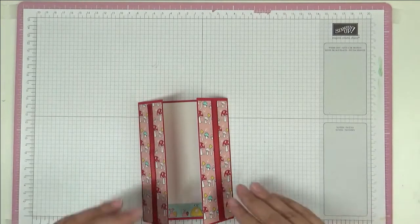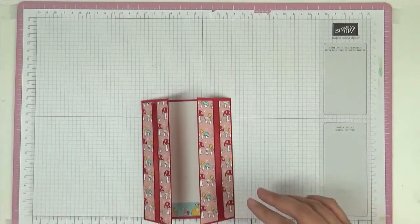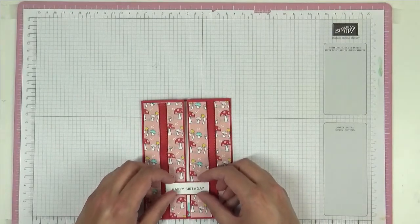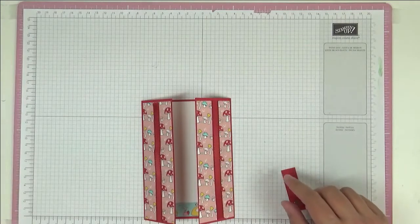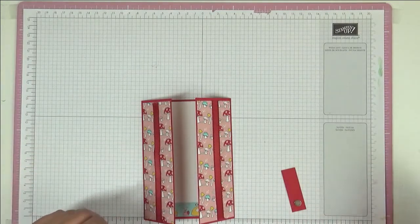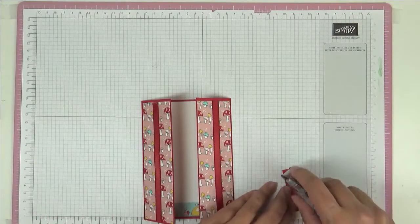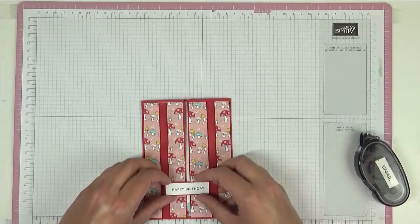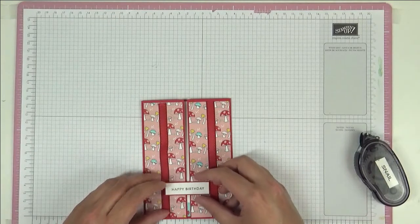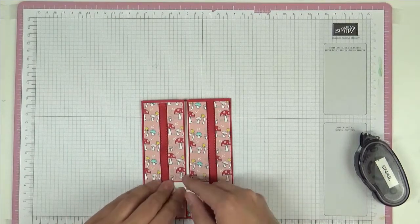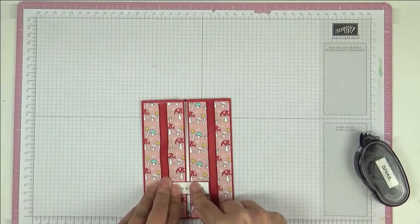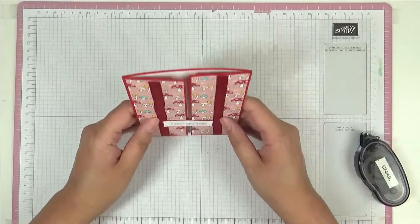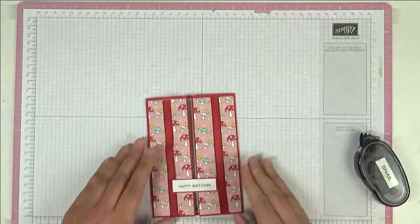We can bring back our sentiment. So we can put a little bit of glue, which is snail. Just on the one half. You don't want to put it all the way across because you don't want it to stick to your center as well, the gap here. Push that down. And now that will keep your card closed.